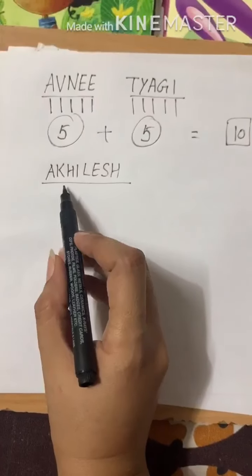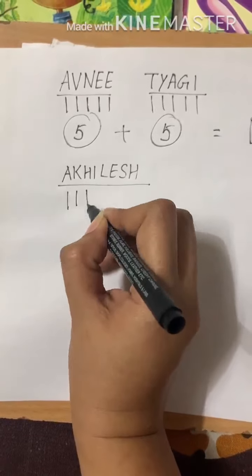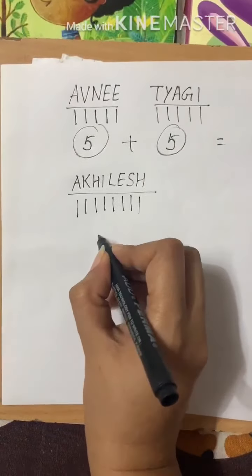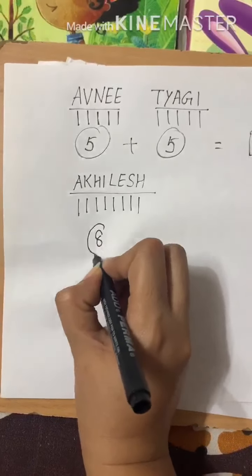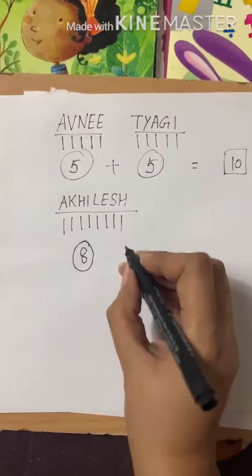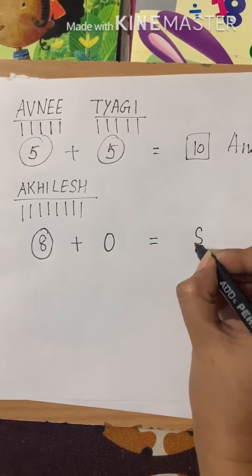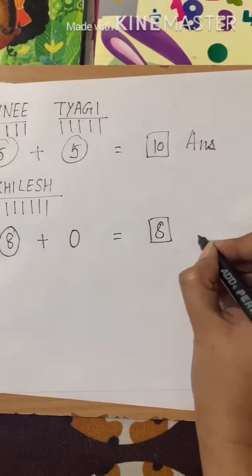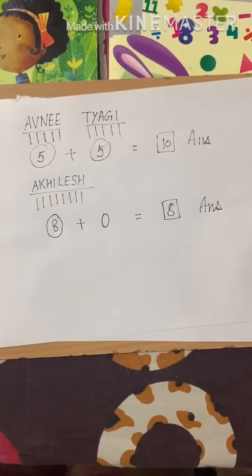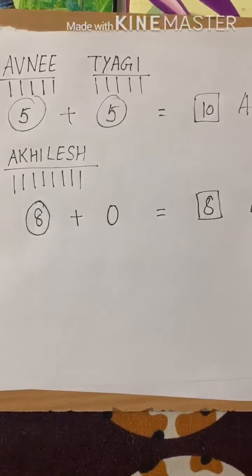Let's take the example of Akhilesh. Let's count the alphabets: 1, 2, 3, 4, 5, 6, 7, 8. This is a bigger name and has 8 alphabets. As I have not written the surname, you can write 0 here, and 8 plus 0 will give you 8. So the name number for Akhilesh is 8.